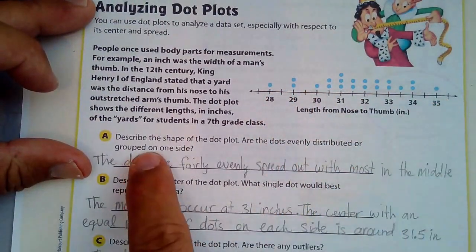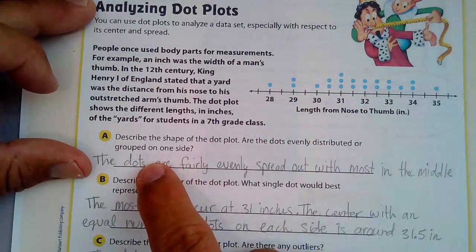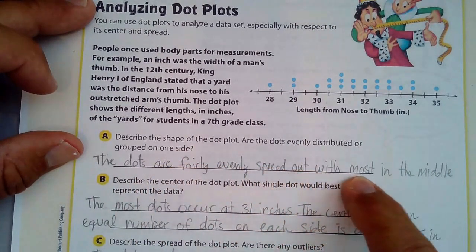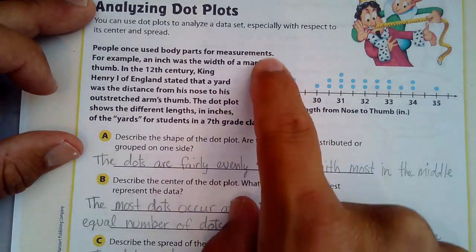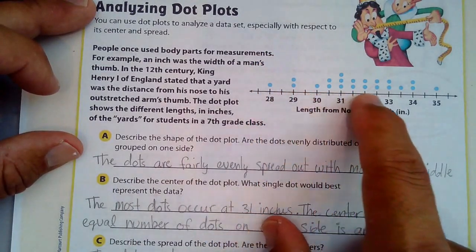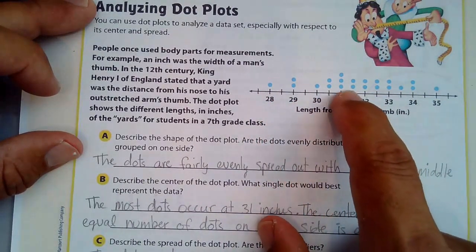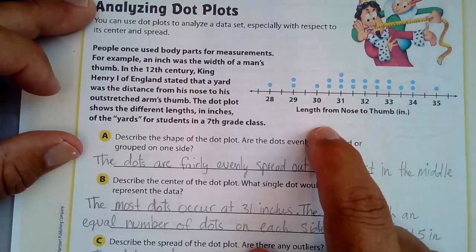As we look at this data here, describe the shape of the dot plot. This is the dot plot. Are the dots evenly distributed or grouped on one side? Well, it looks like they're fairly evenly spread out with the most in the middle. There's none of them that has 8 right here, and then it just goes none, something like that. For the most part, the highest frequency is 3, and they're kind of grouped somewhere in the middle here. So that's the shape of it.